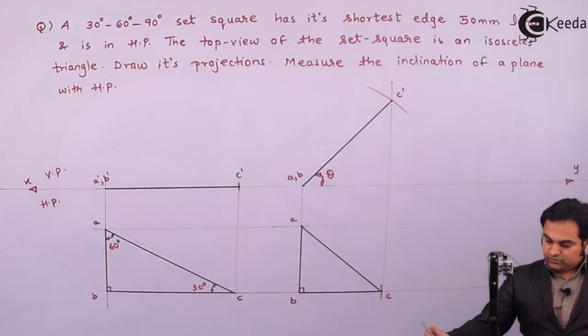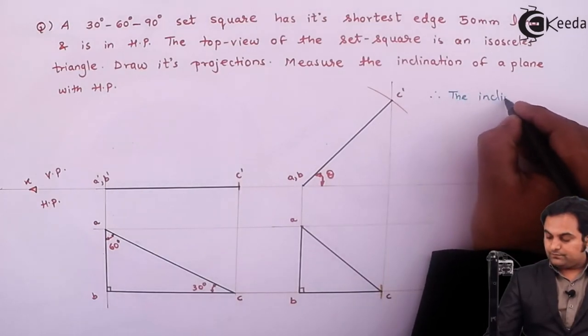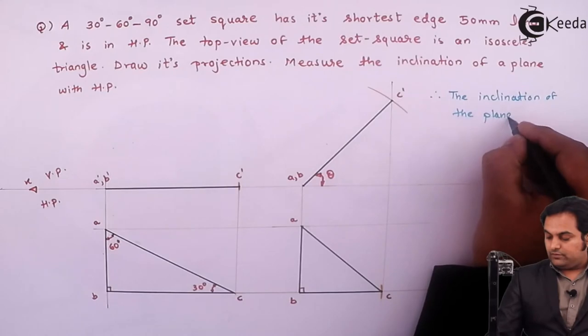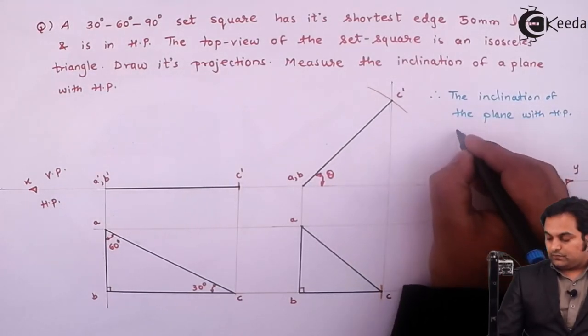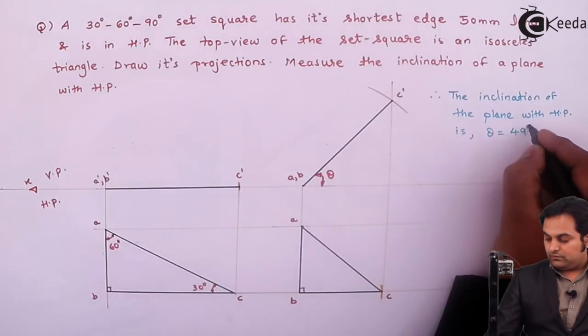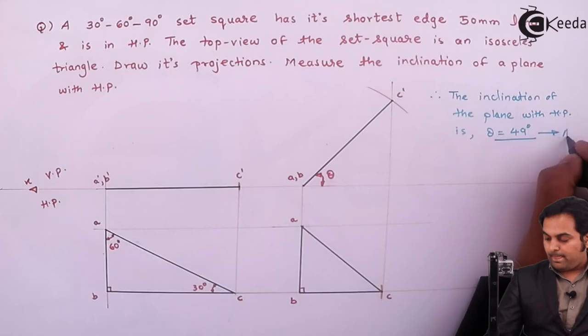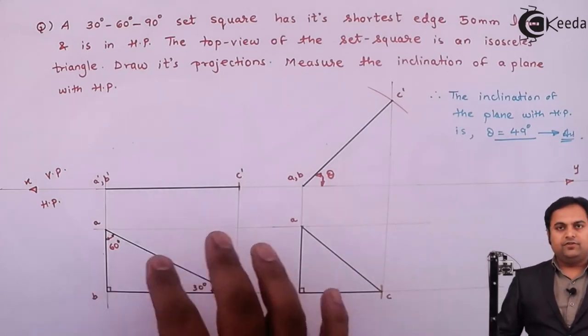So therefore, the inclination of the plane with HP is theta is equal to 49 degree. That's the answer. 50 degree. So here, if we see that, this isosceles triangle is here,